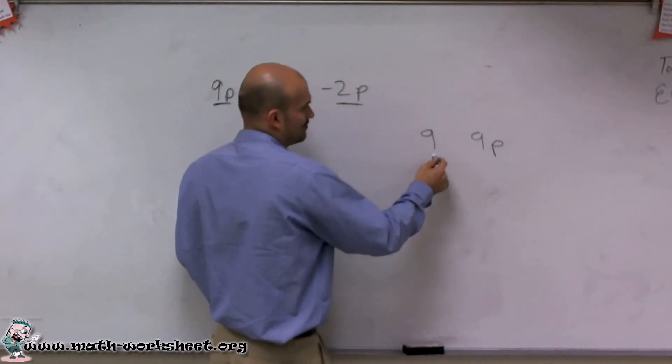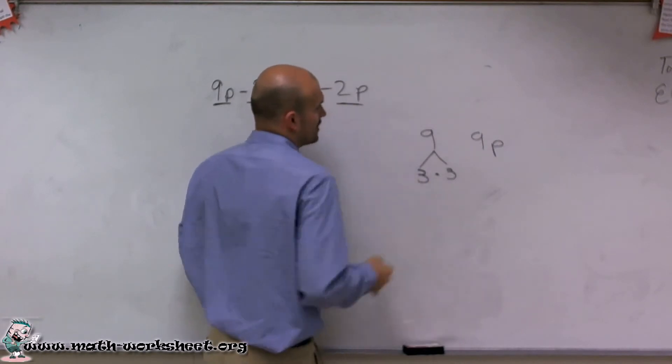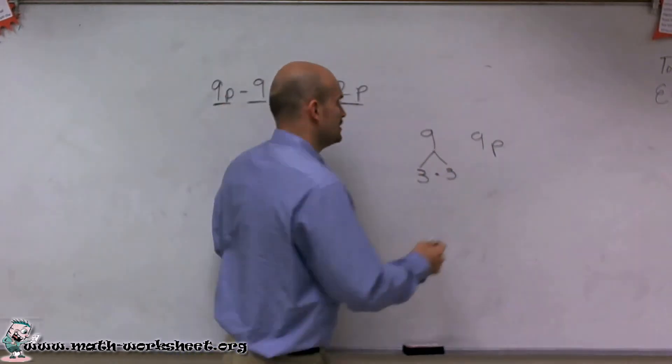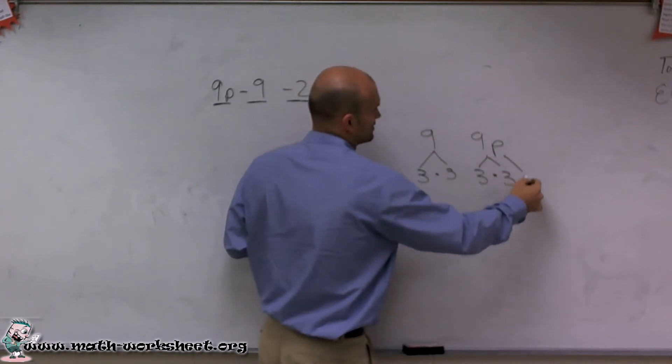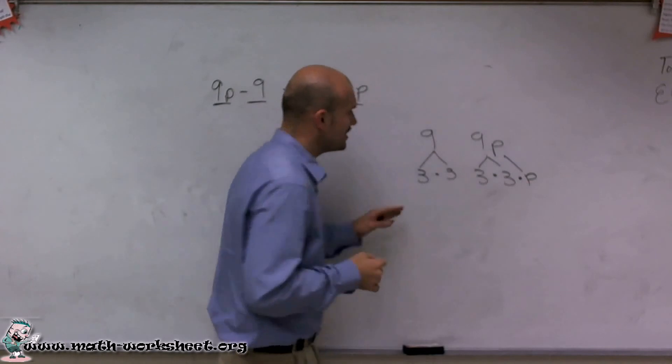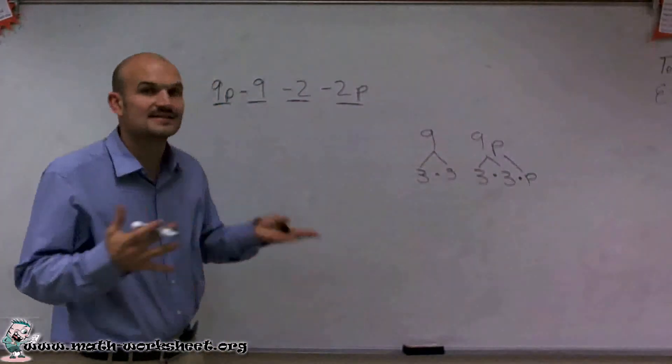When looking at the factors of 9 and 9p, if I was going to break this down, you could break this down into 3 times 3. However, to break down 9p, you'd have to break that down into 3 times 3 times p. So therefore, you can see that their factors are not the same. Therefore, we can't add and subtract them.